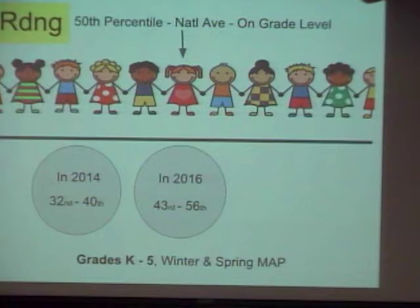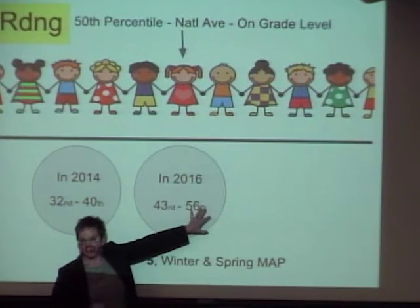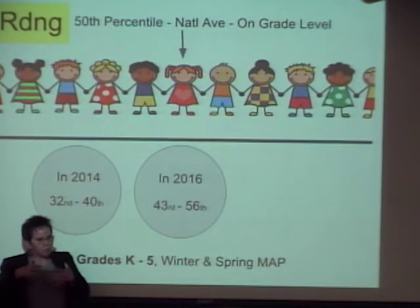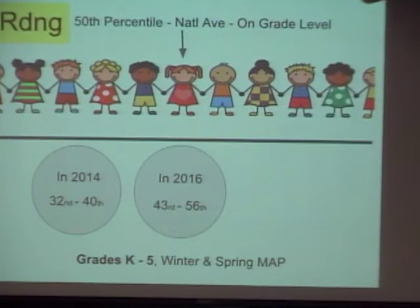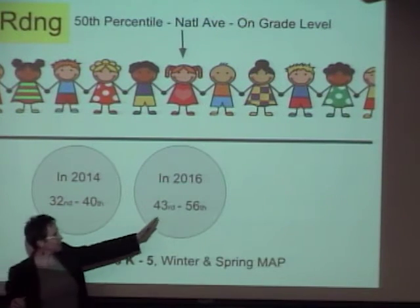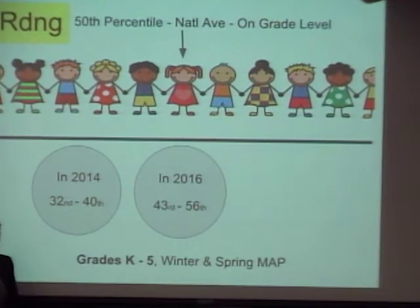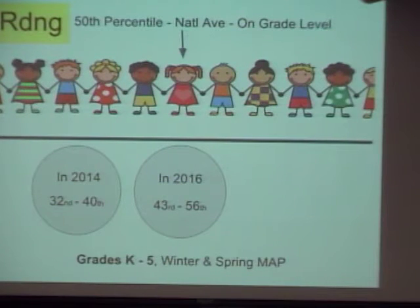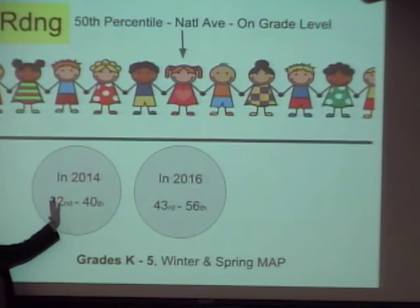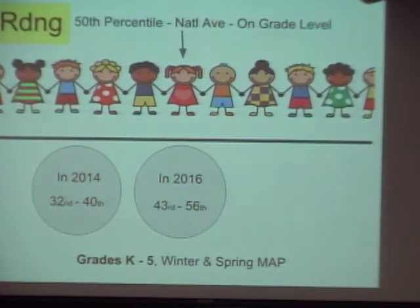In two years' time, here's where we are. In grades K through 5, our kindergarten and first grade is actually up at the 56th percentile. That means in winter and spring, students are above where they're supposed to be — finishing beyond grade level. The rest of our grade levels are right at grade level or just a few months behind, ranging from the 43rd to the 56th. This is a national assessment; it's all computerized. This isn't teachers fixing it or scoring their own assessments. This is the real growth we've made.